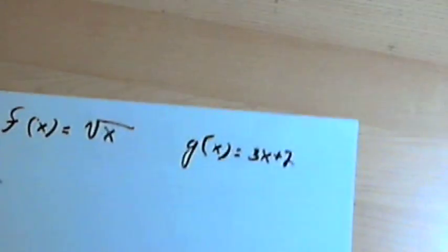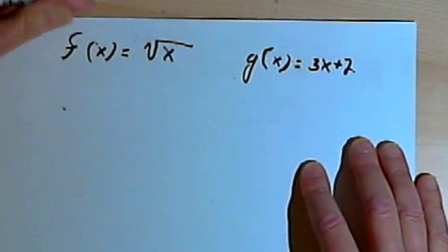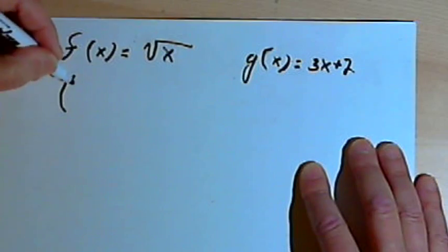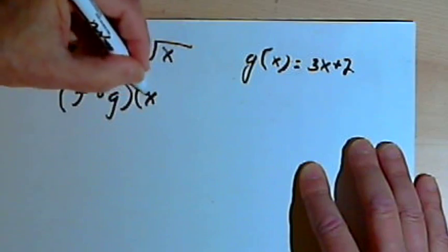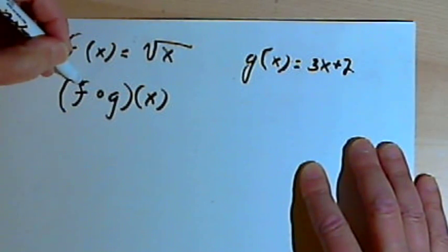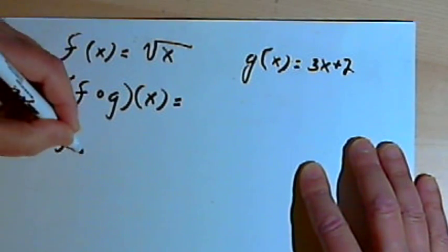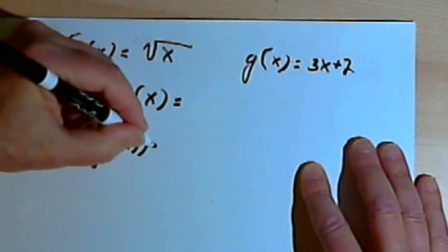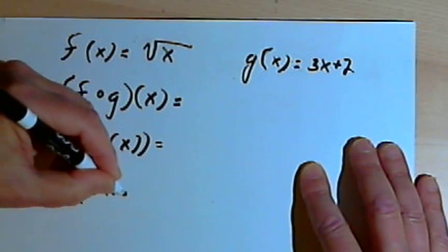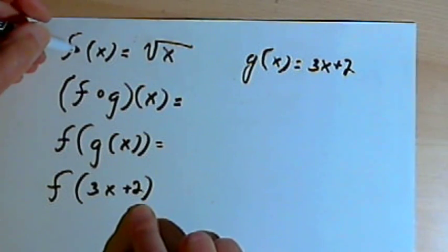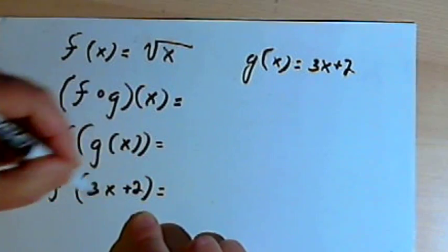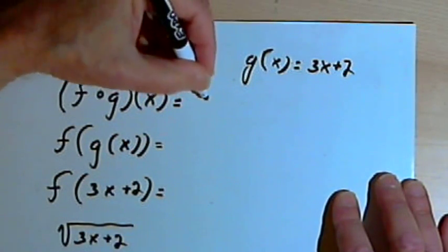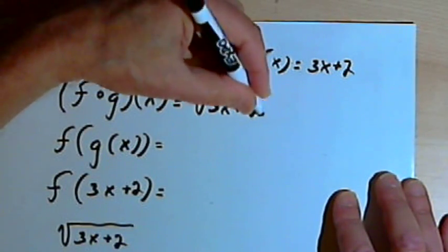Let's take a quick look at another one. In this case I've got f of x equals the square root of x and g of x equals 3x plus 2. Let's do f compose g of x — find out what that composition is and what the restrictions are going to be. I'll turn this into f of g of x. Since g of x is 3x plus 2, I'll rewrite this as f of 3x plus 2. My f function says take the square root of that, so f compose g of x equals the square root of 3x plus 2.